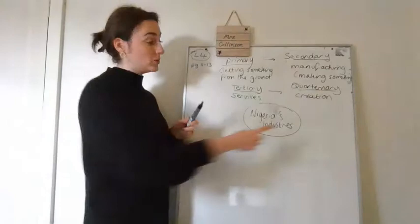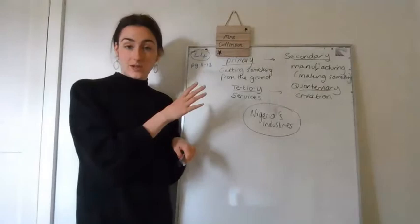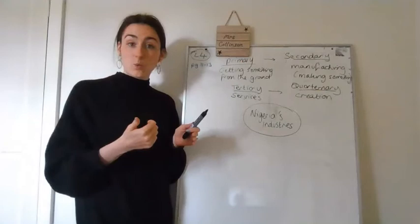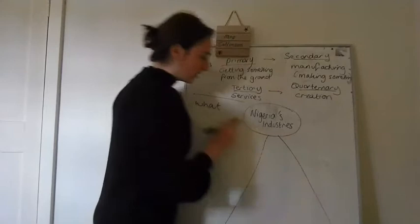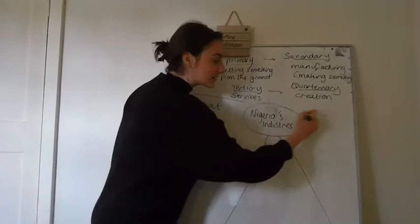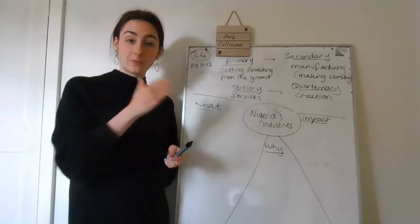Ideally, you want to be in this quaternary sector. So when we're looking at Nigeria, we're going to be looking at three different areas to do with their industries. And it's all about how it's changed over time. So the first thing is, what has changed? So we're going to look at what has changed. Let's split this into three. What's changed? Why has it changed? And what impact has this got? What impact has these changes had on the economy?